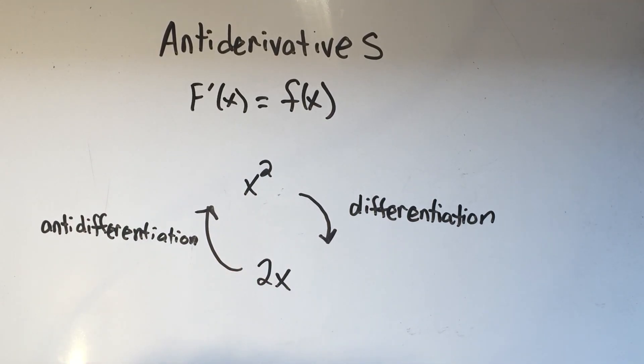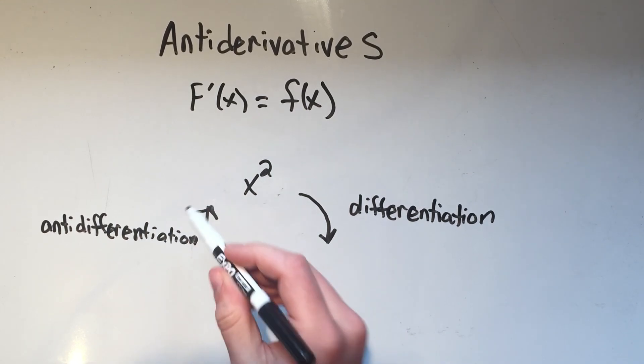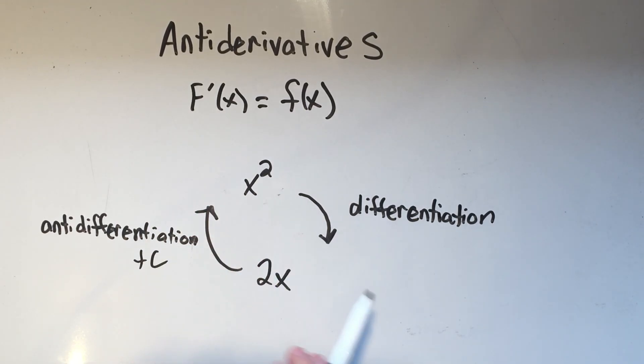There's a little thing we have to do when we take the anti-derivative: we have to add c, a constant. That's just because whenever you take the derivative, a constant goes to zero. So there might have been a constant we have to account for, but that's not a huge deal at the moment.